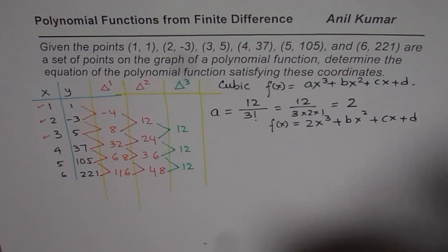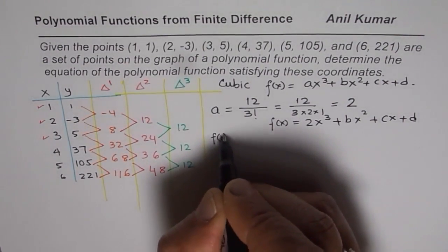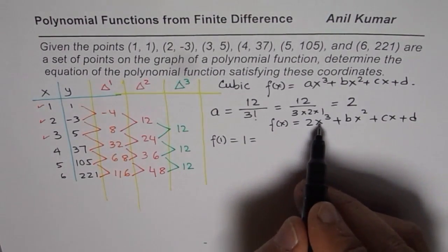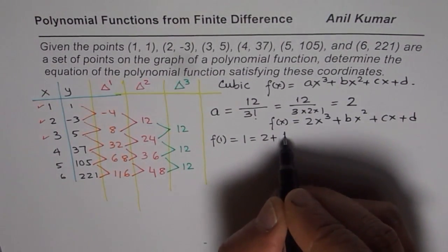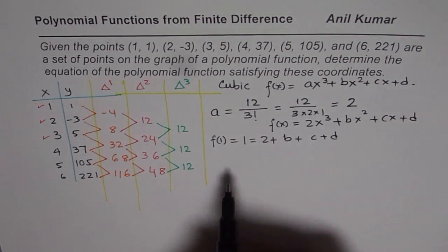So let us write down what is f(1). So f(1) is equal to 1 for us. And I am substituting 1 here, so I get 2 plus b plus c plus d. So that is my first equation.